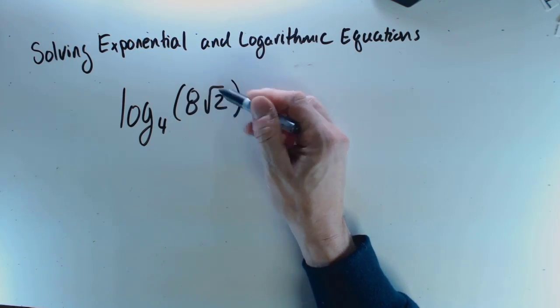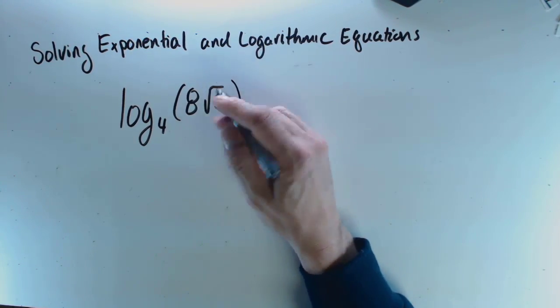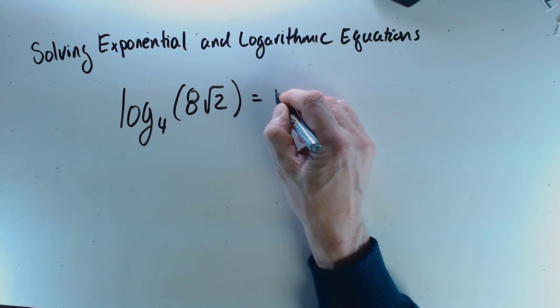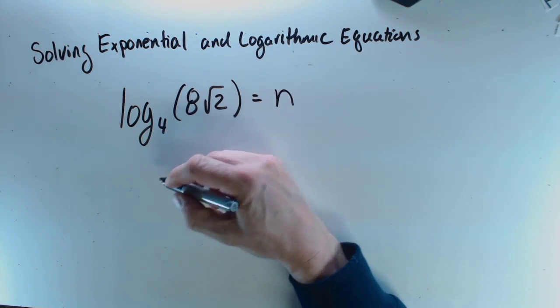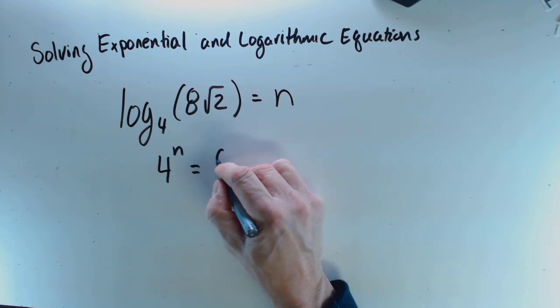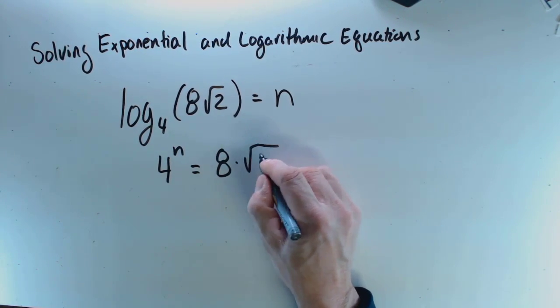I could turn this expression into 4 to some exponent, and the exponent property of logs would solve it for me. But what I'm going to do instead is say this is equal to n, and so that means that 4 to the exponent n is equal to 8 times the square root of 2.